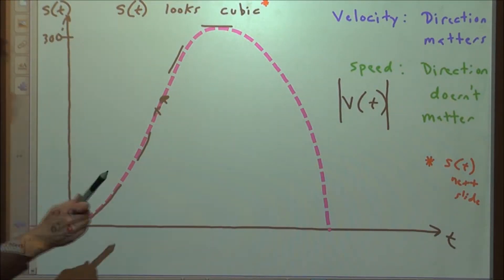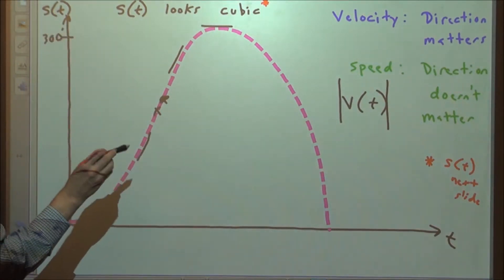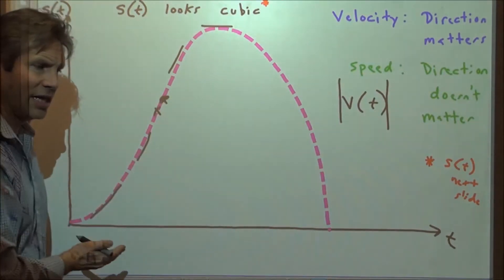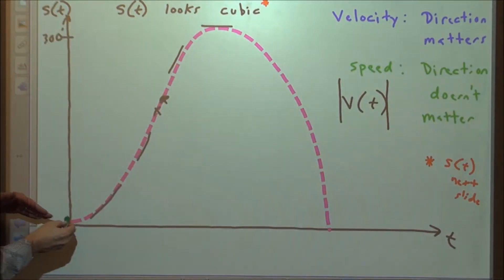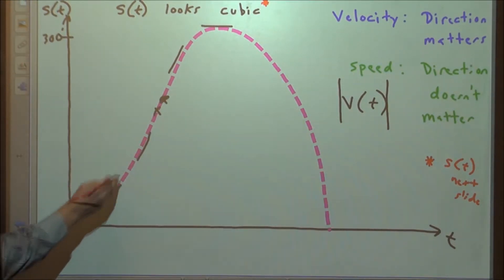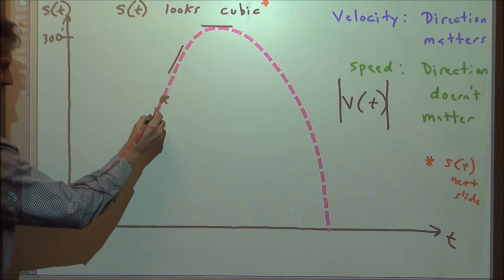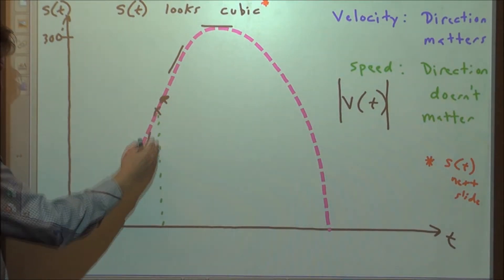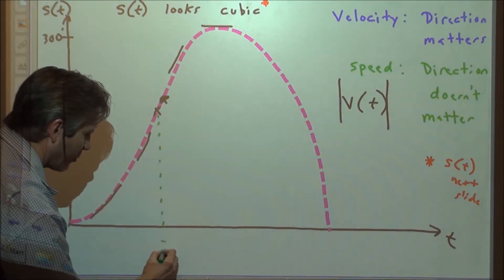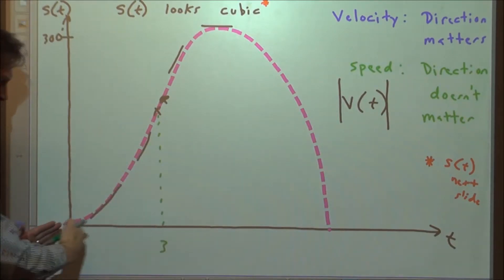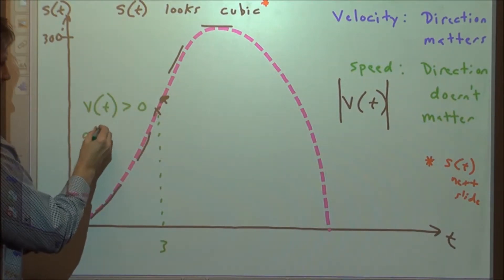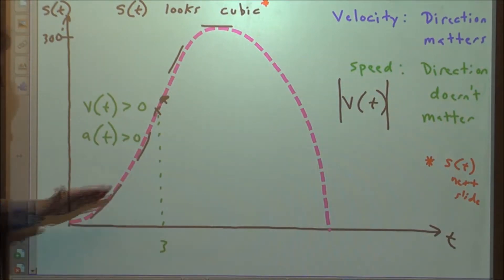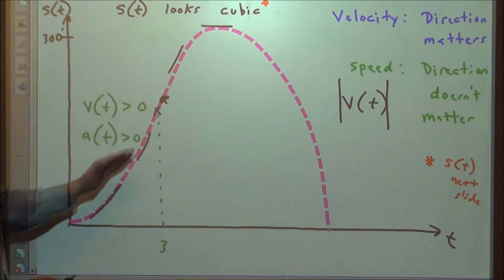In the world of calculus, we need to understand positive velocity, negative velocity, positive acceleration, and negative acceleration. In this first interval, where the graph is concave up, all tangent lines are positive — the velocity v(t) is greater than zero and the acceleration a(t) is greater than zero. So the car is going in a positive direction and it's speeding up.